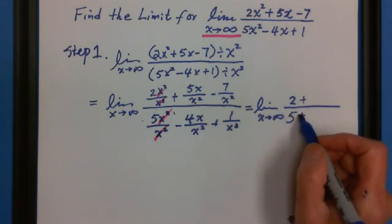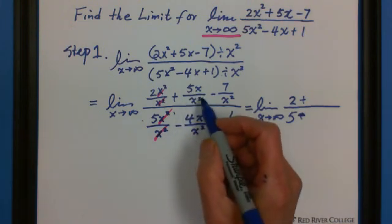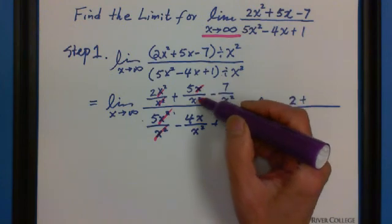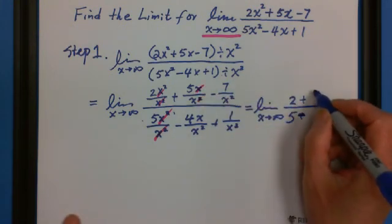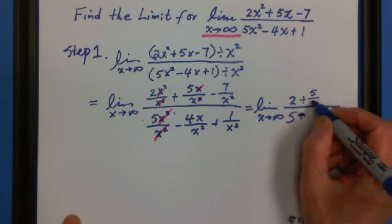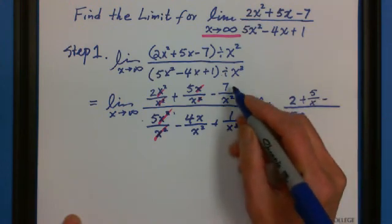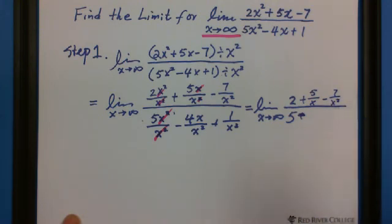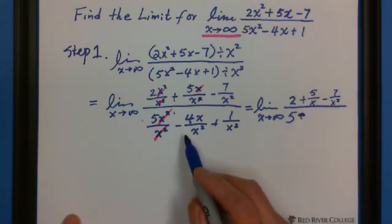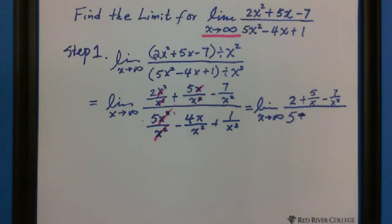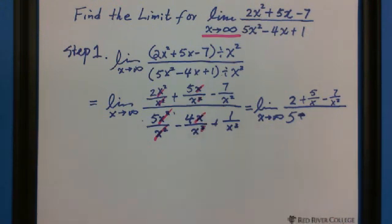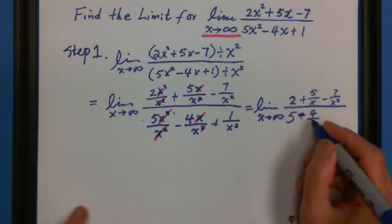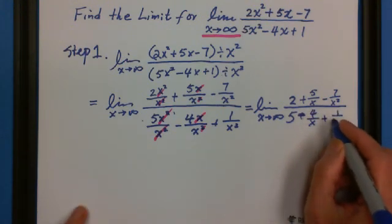This is minus. And the 5x divided by x squared cancel with the x, 1 of the x squared. But we still have x on the bottom. So we have 5 over x. And this one, no more to simplify, 7 over x squared. And this one minus: cancel with 1 of the x. So the bottom is 4 over x, plus 1 over x squared.